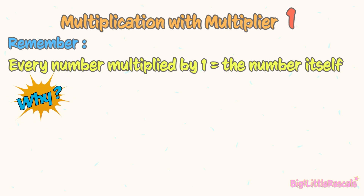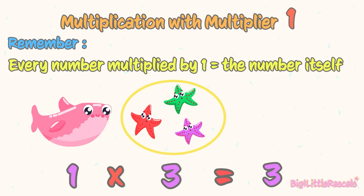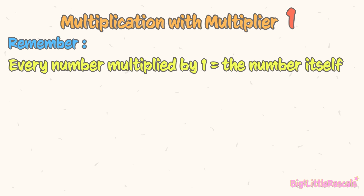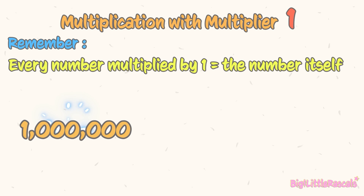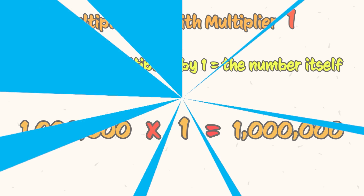Why? Let's see this. Only 1 Mickey the fish has 3 starfish friends. So how many starfishes are there in total? The answer is 3 starfishes. So every number multiplied by 1 is equal to the number itself. For example, 1 million multiplied by 1 is equal to 1 million. Easy, right?